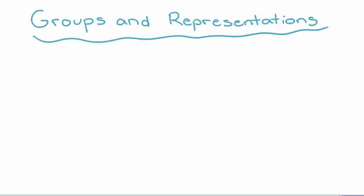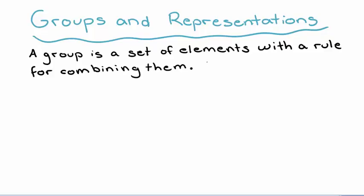Before we jump straight into talking about tensors, let's talk a little bit about groups and representations. A group is formally defined as a set of elements with some rule for combining them. We'll write a group as some set G1, G2, etc., where G1 and G2 are elements of the group, and we can combine some Gi with some Gj via some rule. In order for a set of elements to be considered a group, there are four requirements that it must satisfy.